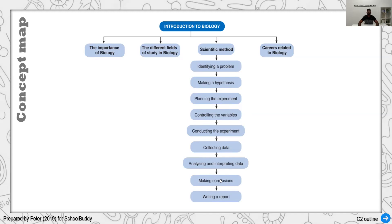These points bring us to the end of the first chapter. The first chapter is a basic chapter, and most of the time questions from it are rare to be asked directly — because for SPM students, you will be applying these scientific methods in your Paper 3.